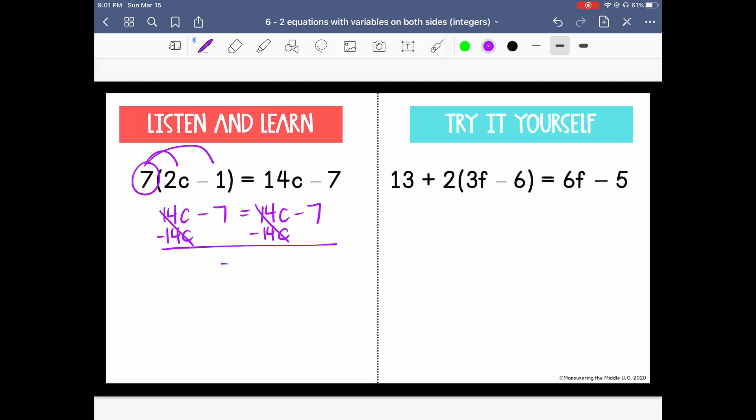If I write down what I'm left with, I have negative 7 equals negative 7. Because that is a true statement, we would say that the answer here is all real numbers.